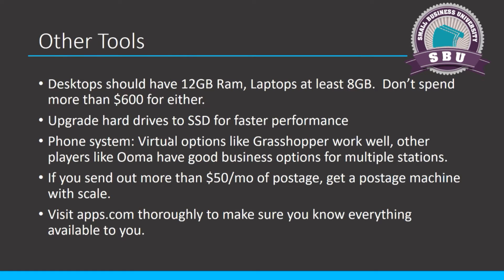When it comes to a phone system, virtual is definitely the way to go these days. Grasshopper is a company with a great phone system. But if you've got several employees who all need phones and want a virtual option, take a look at UMA — they have hardware you can buy and will help you set it all up, and it's all on the Internet. If you're doing more than $50 a month in postage, go get a postage machine with a scale. You don't have to run back and forth to the post office, you can weigh your mail, put the right amount of postage on it, and save money.